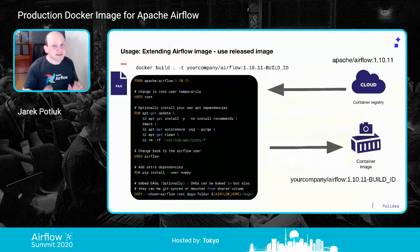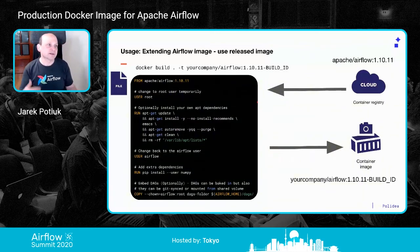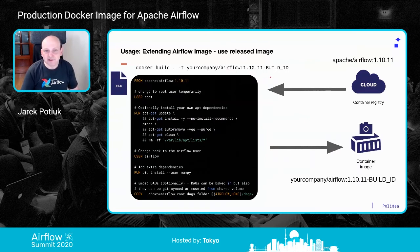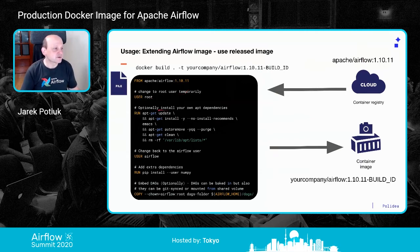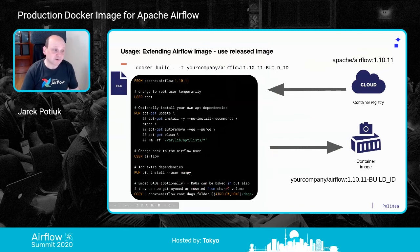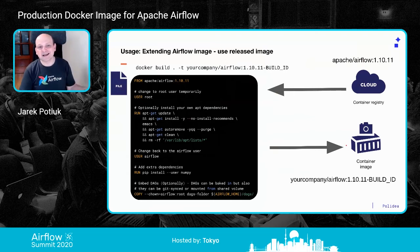We're also planning to test the Helm chart against released images — there's an open PR I need to fix, and we'll add more tests. Usage: how to use the image. The first way to extend it is the traditional approach: pull the image from the cloud, write your own Dockerfile. Since we use a non-root user, change back to root, install your own dependencies — like Emacs for example — change back to the Airflow user, install packages, add your DAGs by copying them, and build your own Airflow image.